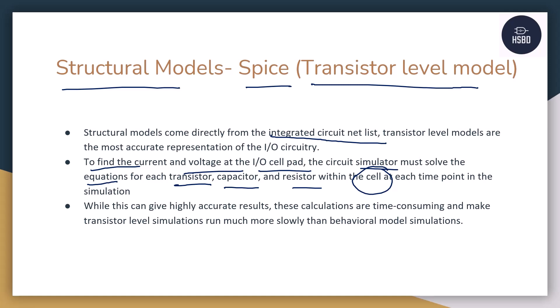Since SPICE models are the most accurate, you might ask: why do we use behavioral models at all? The only disadvantage of structural models is that they are very time-consuming. When running a SPICE model, the simulation may take a lot of time, but results will be accurate. In case of behavioral models, sometimes you don't have enough time to run the simulation and the signal is not critical, but you still want to check eye opening, bit error rate, and whether the channel is running fine — so you use behavioral models, compromising accuracy for speed.